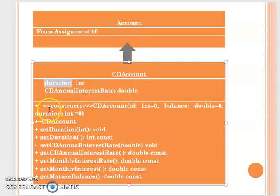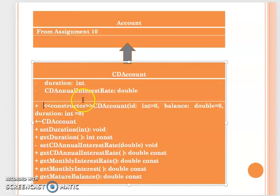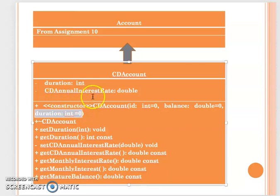In the constructor function, you will pass the ID and balance, with a default value of zero, and the duration. The CD annual interest rate is not passed by the user — you only need the constructor function to receive the duration, and then the CD annual interest rate can be calculated inside the constructor function according to the duration.